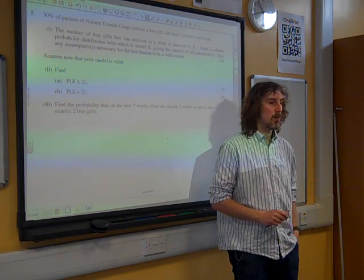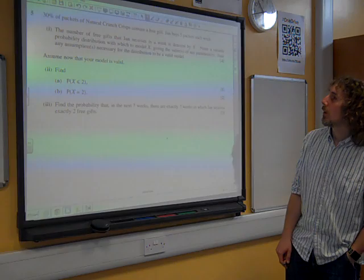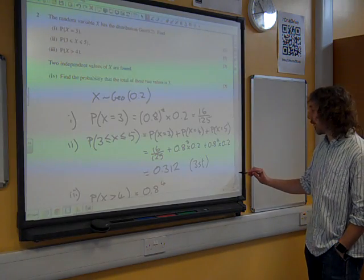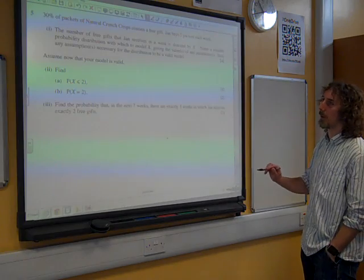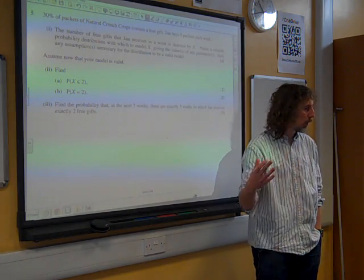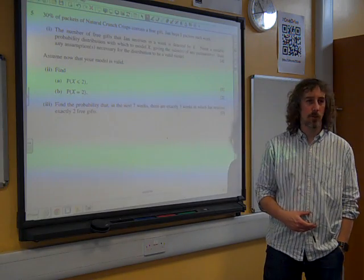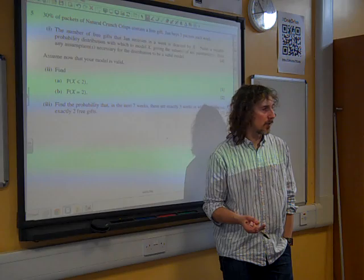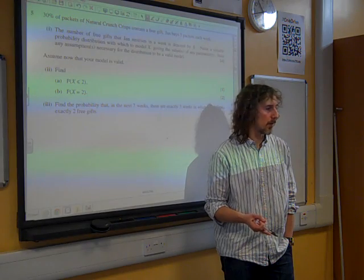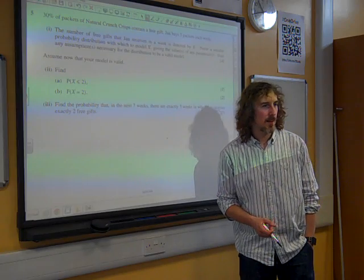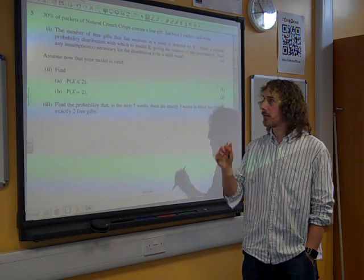Right. Well, where was this in the overall picture? We had a geometric distribution question in question two, so you've already done that. We're on to question five. We only really know two probability distributions, and one of them we've already done a big question on. So I think there's a big clue there that we're going to use the binomial distribution for this.